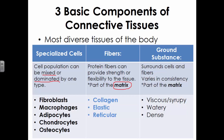Takeaways from this chart would be the five possible choices for cells and the three possible choices for fibers. Ground substance we'll hit on a little bit, but it's not as important to me as recognizing what the cells and the fibers are.